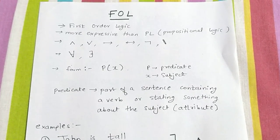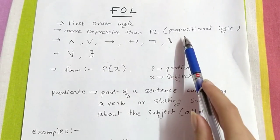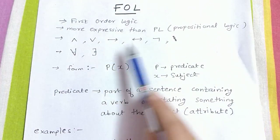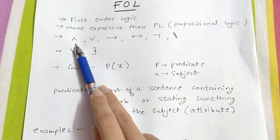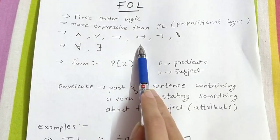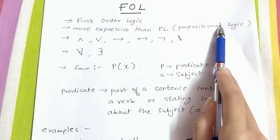Today we are going to discuss FOL, that is first order logic. It is more expressive than propositional logic. The operators that we use in FOL are and (conjunction), or (disjunction), implication, double implication, and negation. These are also used in propositional logic.